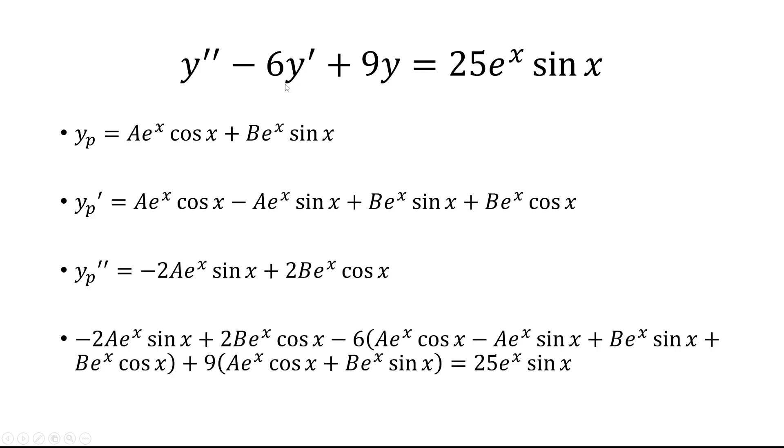so the second derivative, we use yp double prime. First derivative, we use y sub p prime, and then y, we use y sub p. So we substitute that in, and set it equal to 25 e to the x sine x.